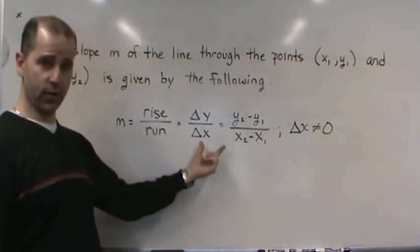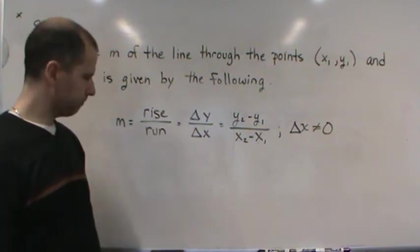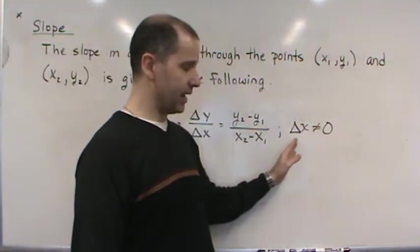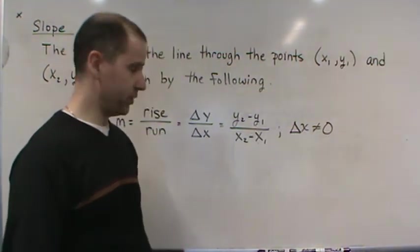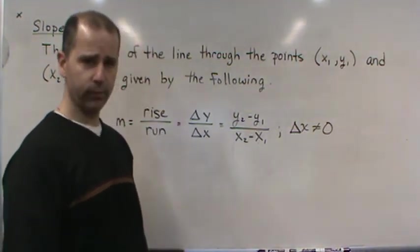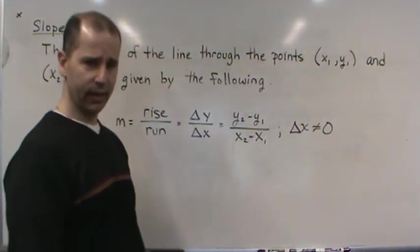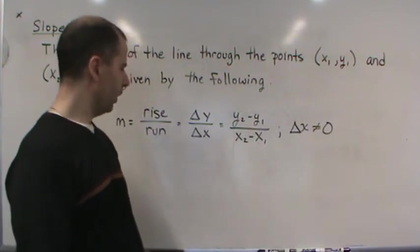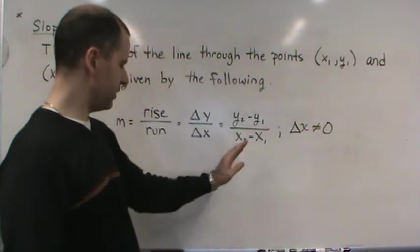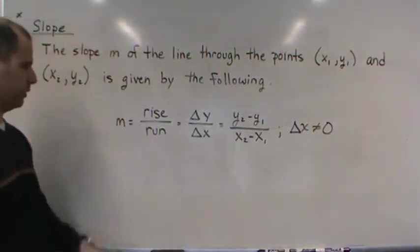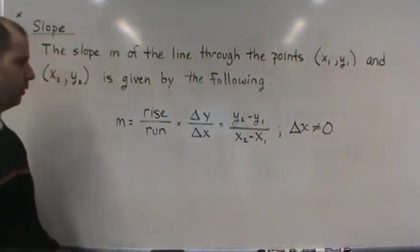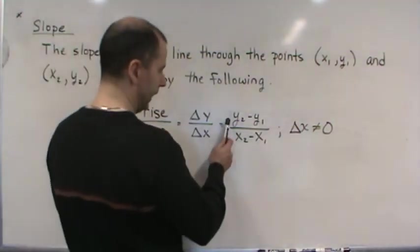So all three of these are the same thing. This is the formula - these are the two ways that we can write it symbolically. Now we're also assuming that the denominator cannot be zero for obvious reasons - you can't divide by zero. We're going to talk about that in the next video, but with that assumption, this is the formula for the slope of a line.